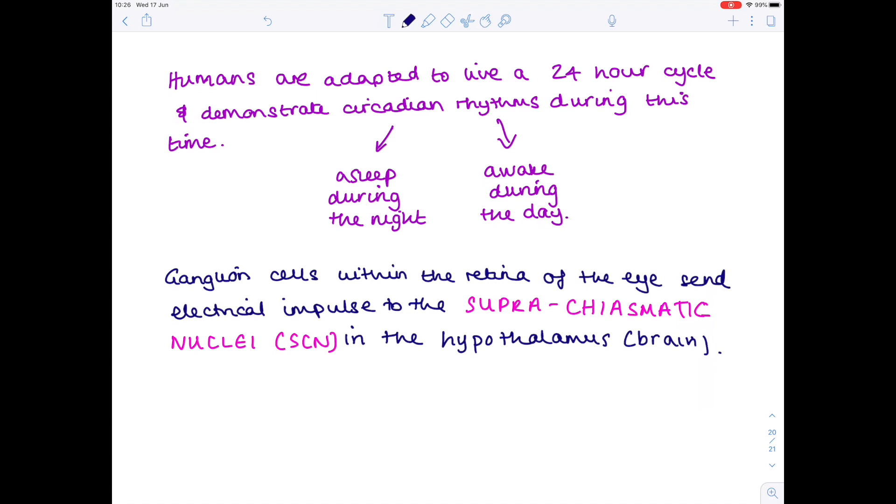The reason why the SCN, the suprachiasmatic nucleus, is so important is because it controls the secretion of the hormone melatonin by the pineal gland.